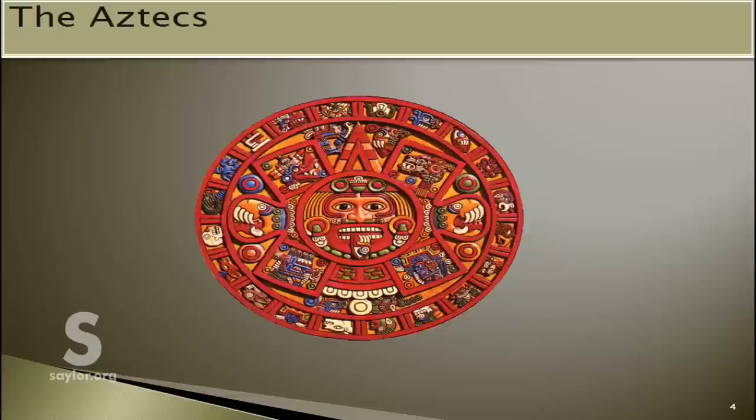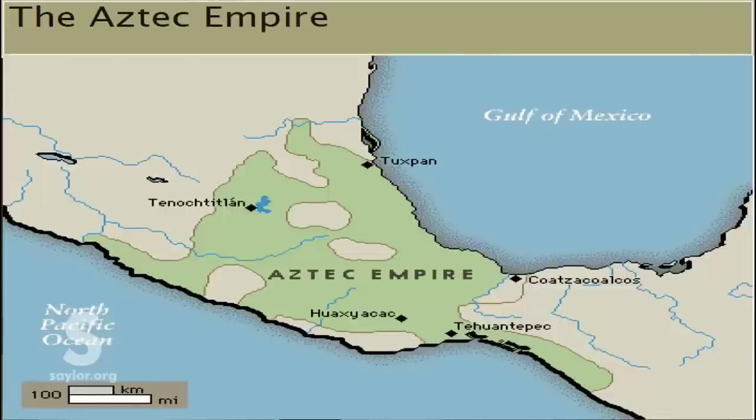Why don't we start by explaining who the Aztecs were? In subunit 1.3.1, you learned about the Ameri-Indian Civilizations, which included the Mexica-Aztecs. As a quick reminder, the Aztecs were a nomadic tribe from northern Mexico that arrived in the Valley of Mexico in the 14th century in Mesoamerica, and spent most of the 15th century conquering neighboring territories, expanding until the height of their power to the area you can see on this map.